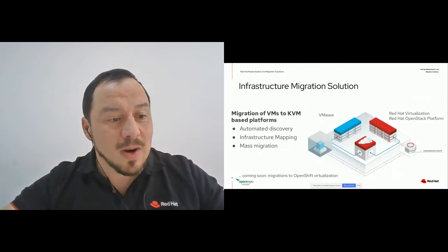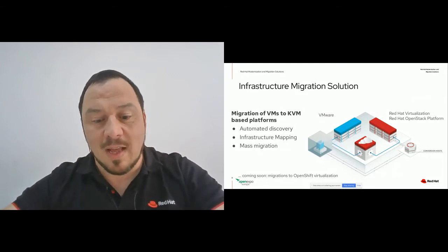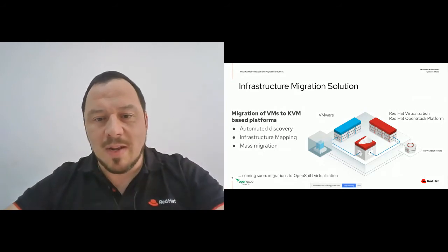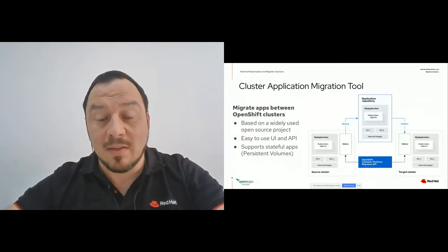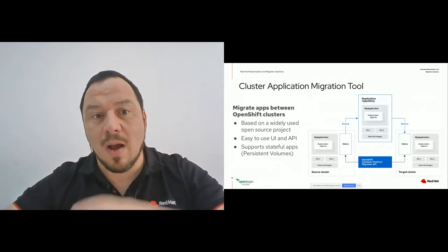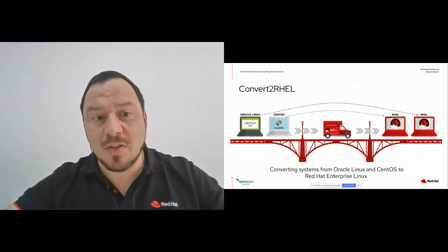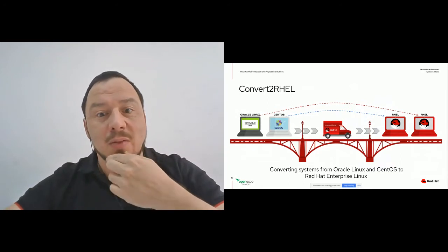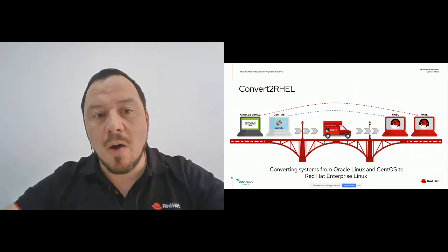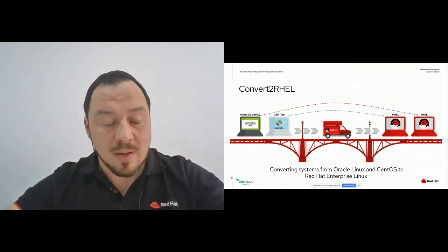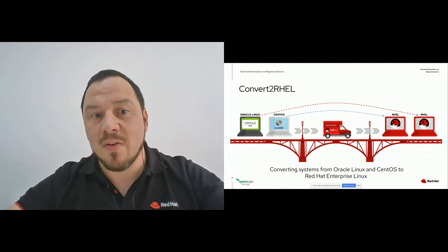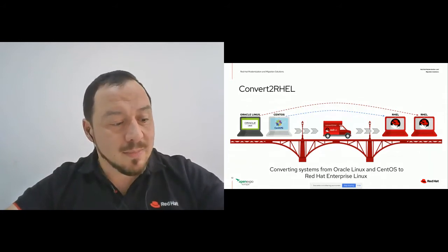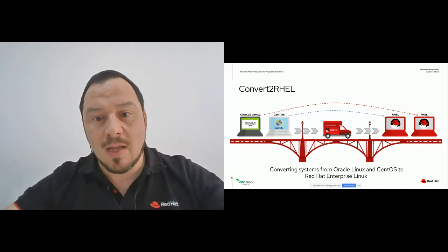The Cluster Application Migration tool is intended to migrate applications running on OpenShift 3 to OpenShift 4, enabling you to use all the benefits OCP4 has like Operators, Istio, and more — migrating both containers and stateful application volumes from one cluster to another. And Convert2RHEL: if you're running CentOS with a workload becoming critical and you need support or certification, our consultants can help you convert those CentOS machines to Red Hat Enterprise Linux in a supported manner using the Convert2RHEL tool.